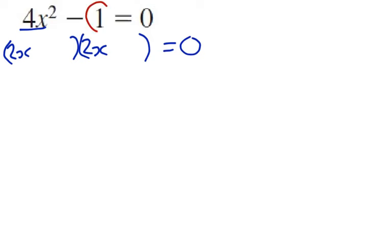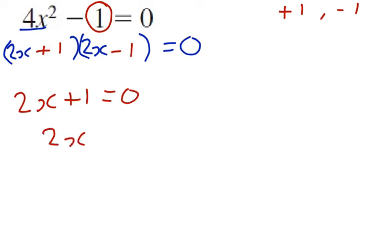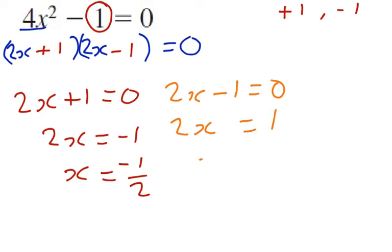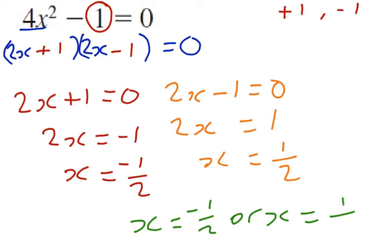Now we're looking for numbers that multiply to make minus 1, while our only options are plus 1 and minus 1. So plus 1 goes in one, minus 1 goes in the other. Now 2x plus 1 equals 0, so 2x equals minus 1, so x equals minus 1 over 2. And 2x minus 1 equals 0, so 2x equals 1, so x equals 1 half, giving us our final answer of x equals minus 1 half, or x equals 1 half.